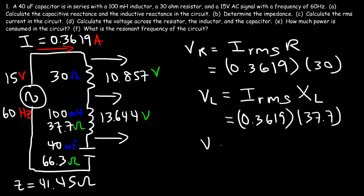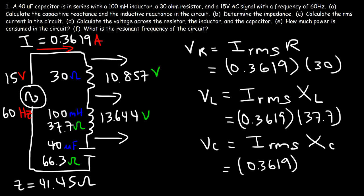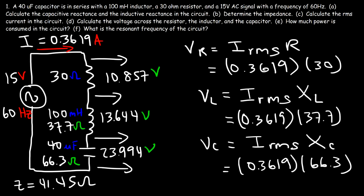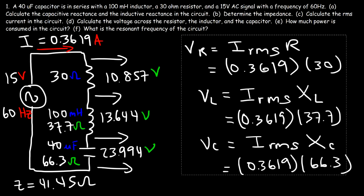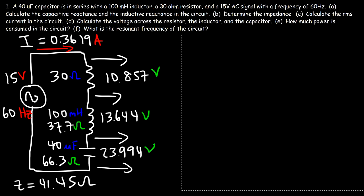Now let's calculate the voltage across the capacitor. It's the current multiplied by the capacitive reactance, which is 66.3 ohms. So the voltage across the capacitor is 23.994 volts. Now you know how to calculate the voltage across the resistor, the inductor, and the capacitor.